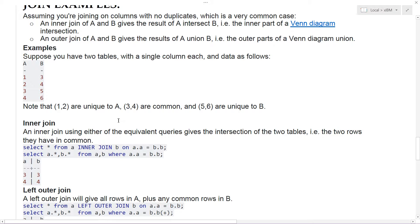An outer join of A and B gives the results of A union B, that is the outer parts of the Venn diagram union. So here's an example. Suppose you have two tables, A and B, single column each, data looks like this: one, two, three, four in A, and B has three, four, five, six. So note that one and two are unique to A, and three and four are common in both. They both have three and four. And five and six are unique to B.